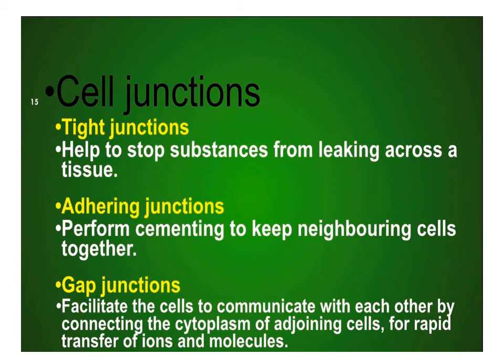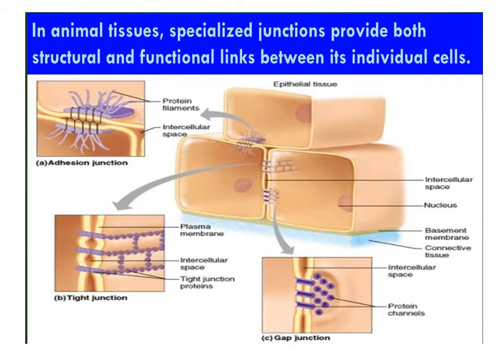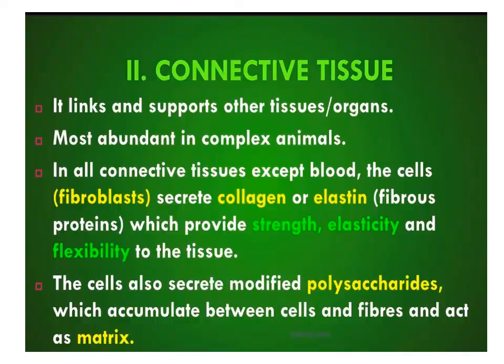Cell junctions are specialized structures which provide both structural and functional links between the cells of animal tissue. Three types of junctions are found in epithelium and other tissues. Tight junctions: plasma membranes of adjacent cells are fused at intervals and help to stop substances from leaking across the tissue. Adhering junctions perform a cementing function to keep neighboring cells together. Gap junctions facilitate cells to communicate with each other by connecting the cytoplasm of adjoining cells for rapid transfer of ions, small molecules, and sometimes larger molecules.